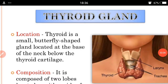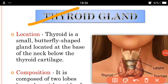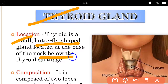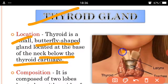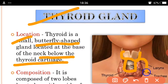Now we discuss the thyroid gland. The thyroid is a small butterfly-shaped gland located at the base of the neck, below the thyroid cartilage. Just below our larynx box, at the base, this butterfly-shaped thyroid gland is present.